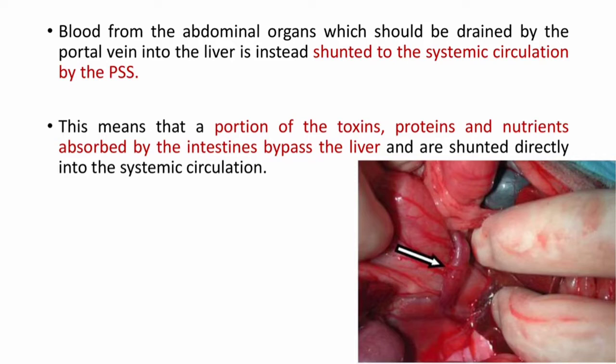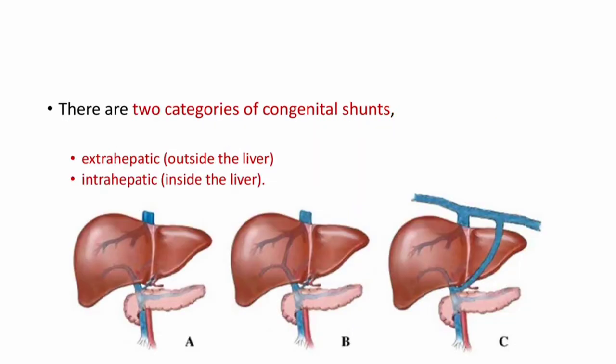In this picture you can see an extrahepatic shunt. There are two categories of congenital shunt: one is extrahepatic outside the liver and second is intrahepatic inside the liver. In the picture, A represents a normal circulation, picture B represents an intrahepatic shunt, and C you can see the extrahepatic shunt.